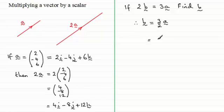So we've just got 3 over 2, 1 and a half if you like, multiplied by the column vector a, 2, minus 4, 6. So we've got 2, minus 4, 6.